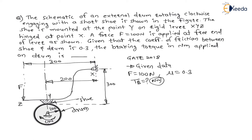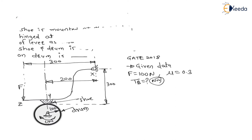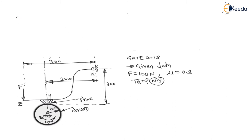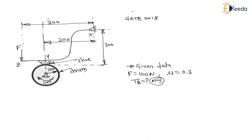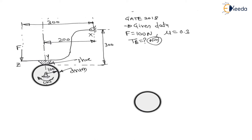Let us go for the solution. For clockwise rotation, if I draw the free body diagram of the drum, the rotation of the drum is clockwise. Considering a point on the drum where the shoe contacts, due to the shoe there will be a normal reaction N, and opposite to the direction of motion there will be a friction force mu*N acting towards the left.